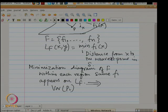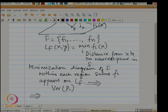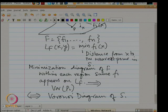So if you take the minimization diagram and look at each region, each region corresponds to the Voronoi cell of the point. The minimization diagram of these distance functions is nothing but the Voronoi diagram. You define the distance functions, you look at where each is minimum, and if you project the lower envelope onto the plane, you get the diagram.